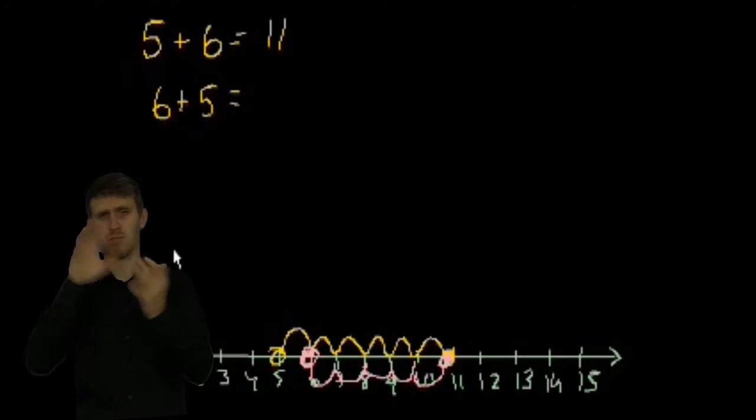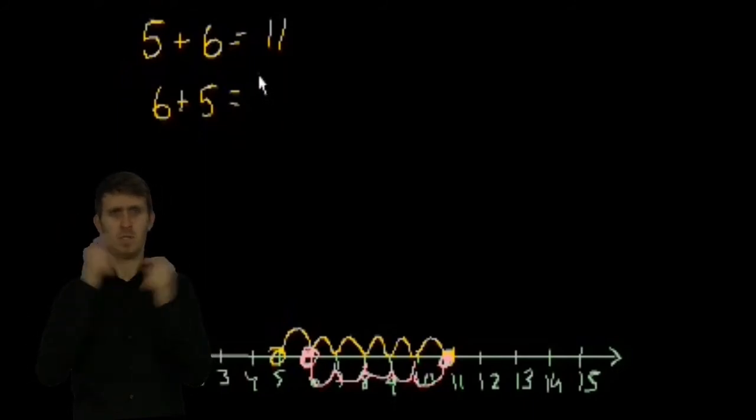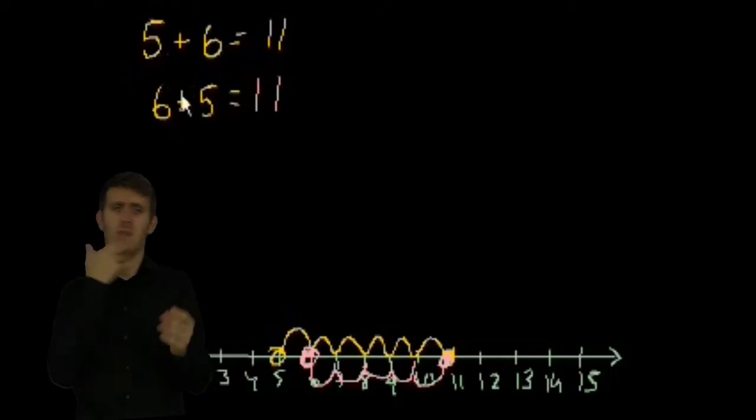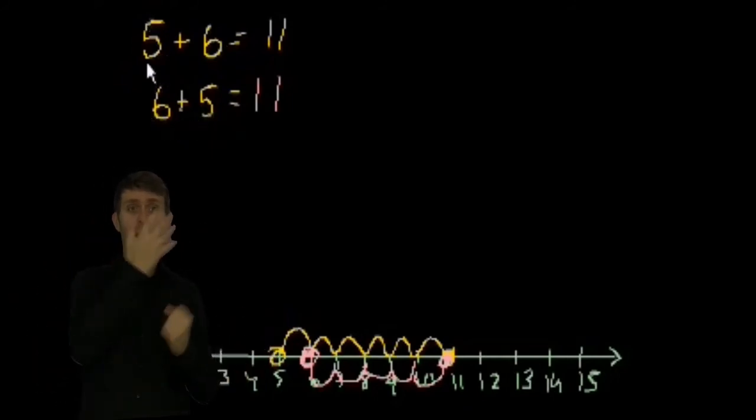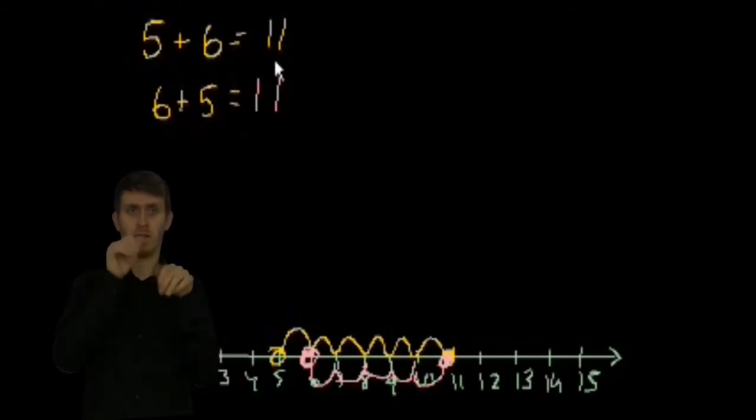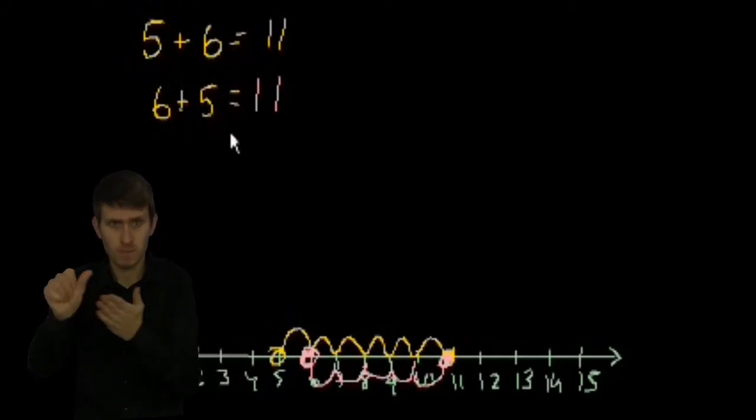And I think you might want to try this on a bunch of problems, and you'll see it always works out. That it doesn't matter what order. 5 plus 6 is the same thing as 6 plus 5. And that makes sense. If I have 5 avocados and you give me 6, I'm going to have 11. If I have 6 avocados and you give me 5, I'm going to have 11 either way.